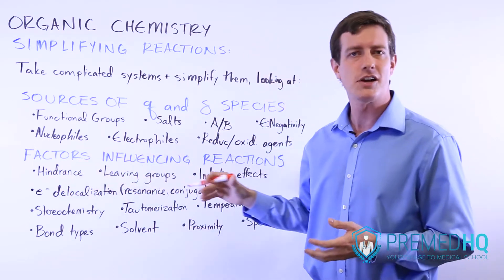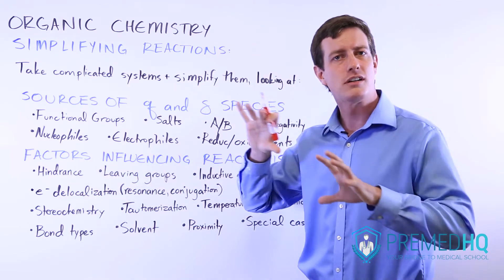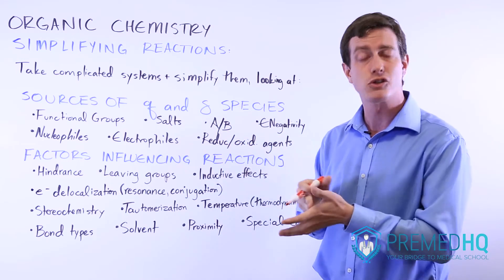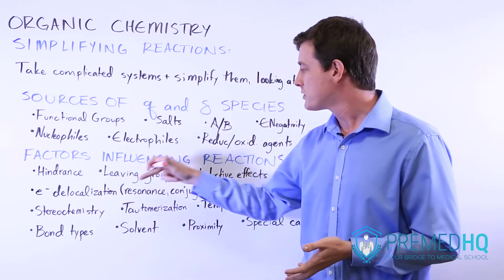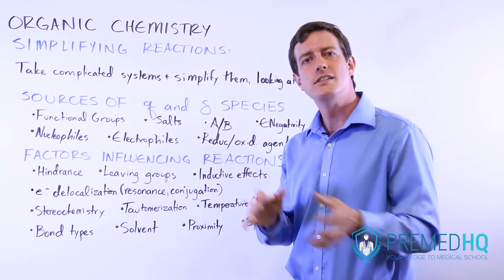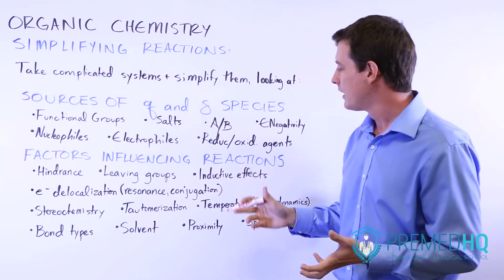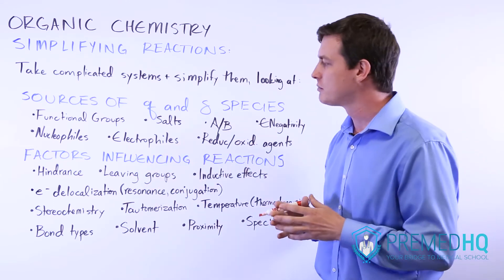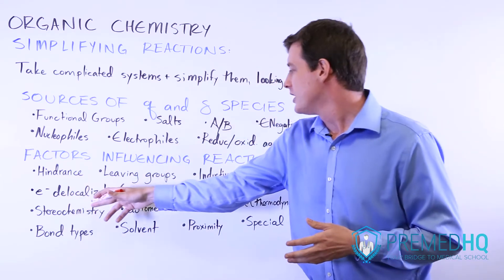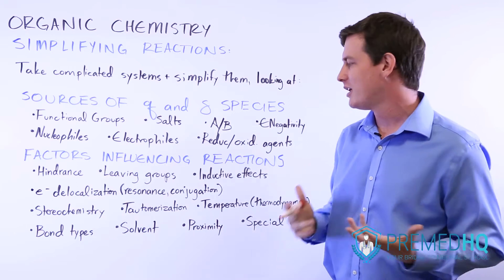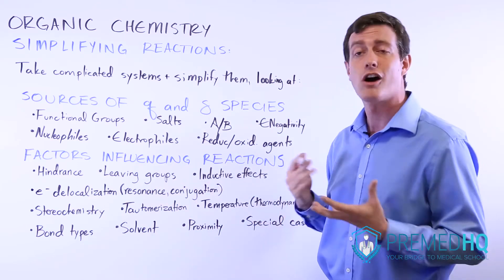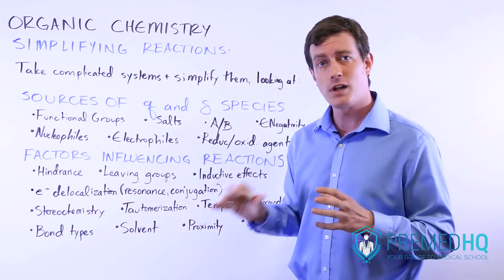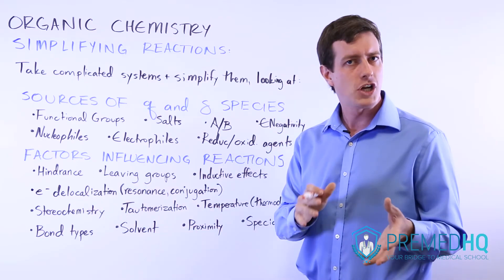You have to look at hindrance, the steric hindrance and electron structural repulsion that can often prevent certain species from interacting with each other. We'll look at leaving groups, which are things that are comfortable disappearing and taking their electrons with them. We'll look at inductive effects, which involve electron donating and withdrawing groups. Electron delocalization, which you're probably more familiar with as resonance, but which also involves conjugated systems and conjugation. Stereochemistry can play a big role, how the shape shapes these interactions.